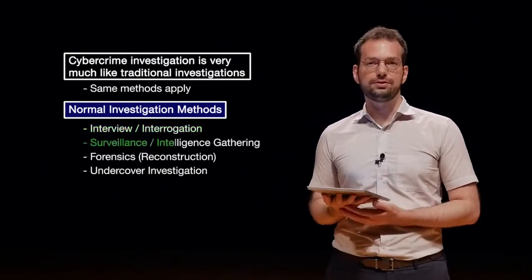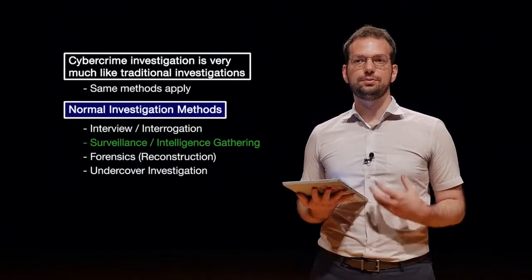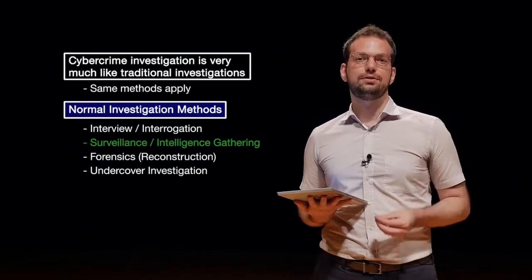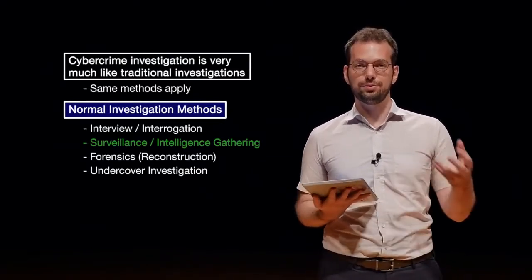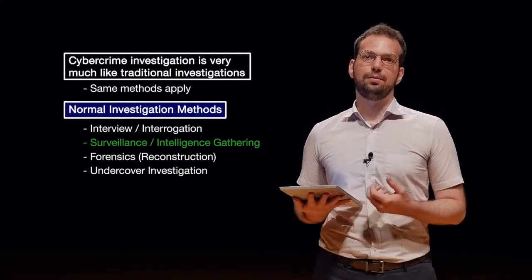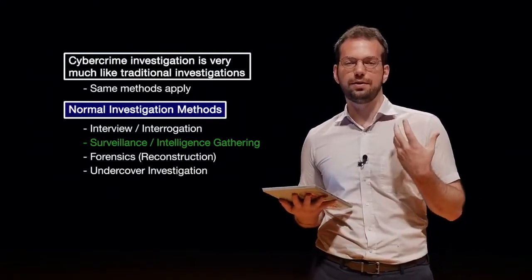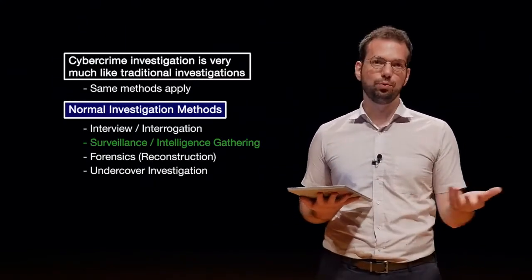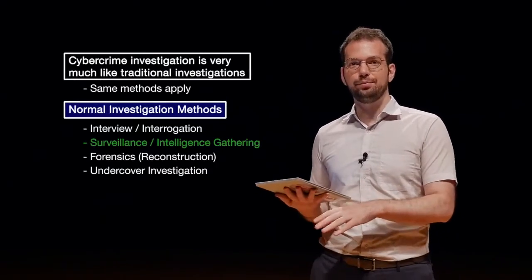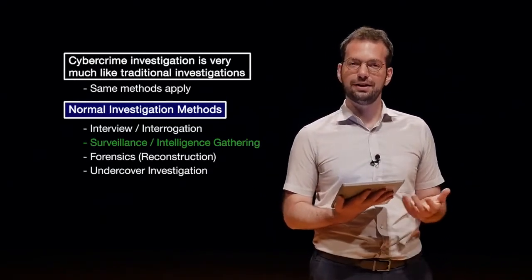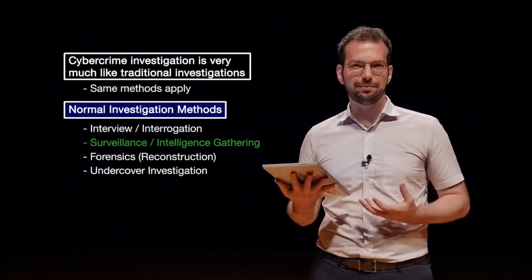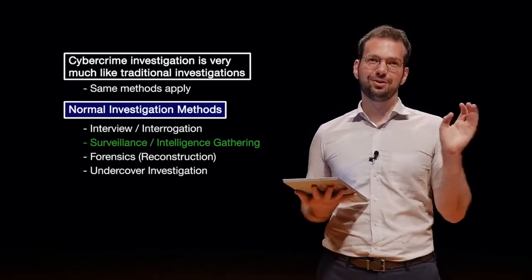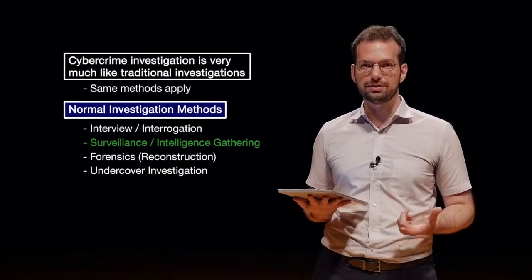Next is surveillance and intelligence gathering. Doing surveillance on suspects, victims, or organizations, or finding information — intelligence helps us to be able to do the investigation because we know more context. For example, what about this person makes them likely to be a suspect? Do they go to work every day and have to do all their crime at night, but we find out all the crimes were done during the day? It gives us more information when we do surveillance or intelligence gathering before we actually do the investigation.